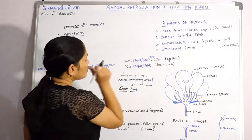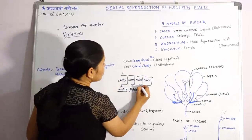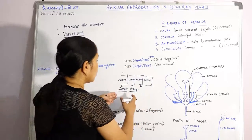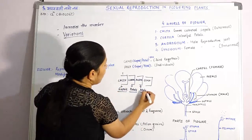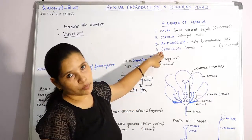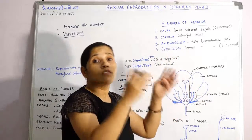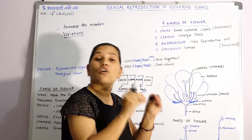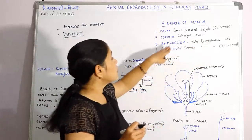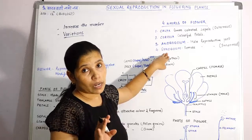In the third whorl we study about the androecium. Androecium is the male reproductive part of any flowering plant. The fourth whorl is the gynoecium. Gynoecium is the female reproductive part, and it is the innermost whorl — the part which is inside the flower.